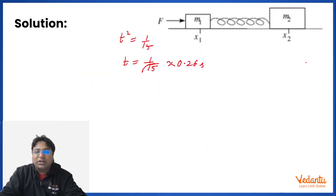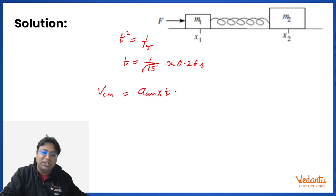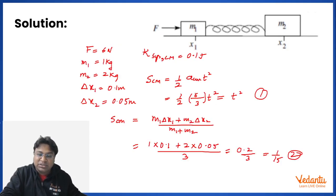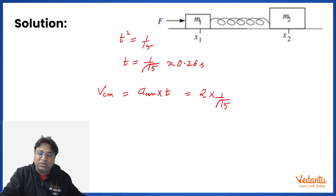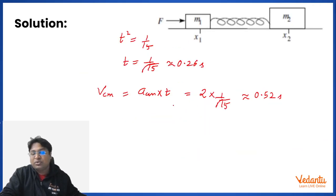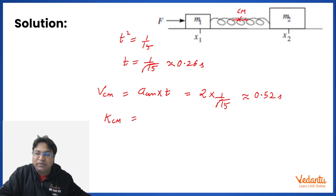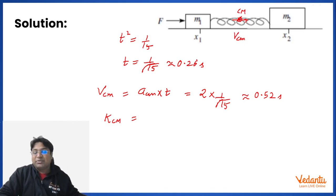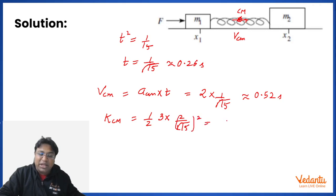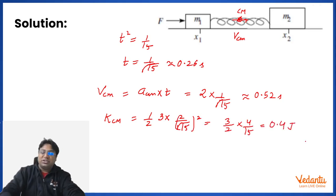Part B asks for the velocity of the center of mass, which is a_CM × T = 2 × (1/√15) ≈ 0.52 m/s. The kinetic energy of the center of mass means: if we consider the entire mass concentrated at the CM moving with speed V_CM, then KE = (1/2) × total mass × V_CM² = (3/2) × (4/15) = 0.4 J.